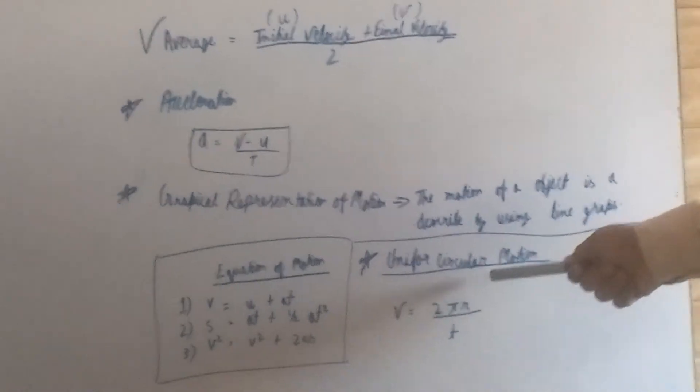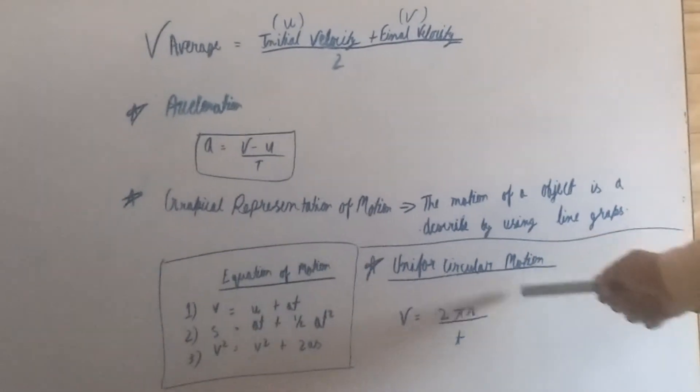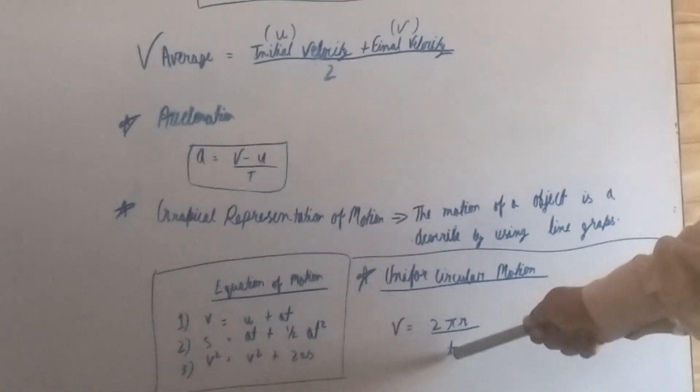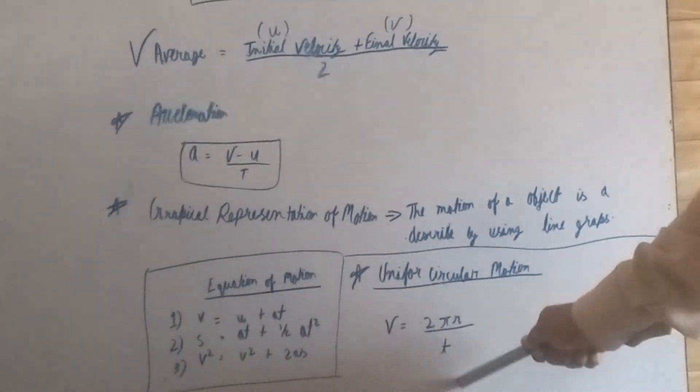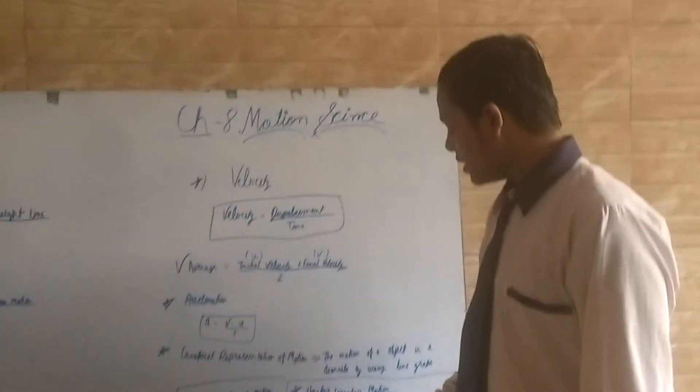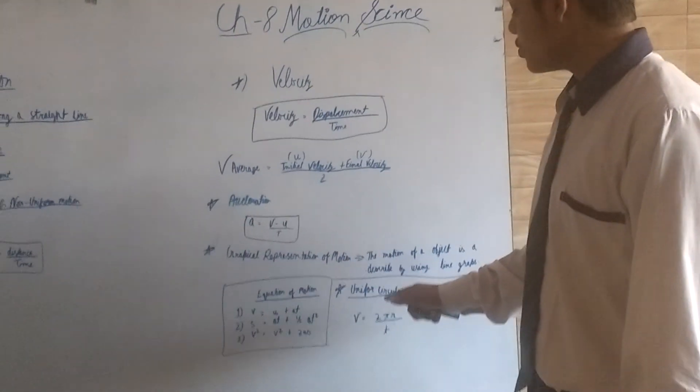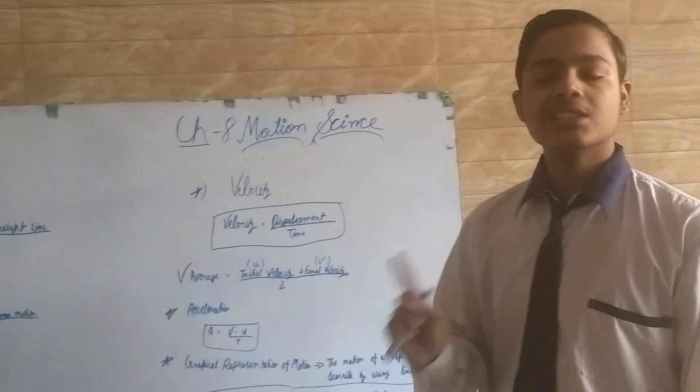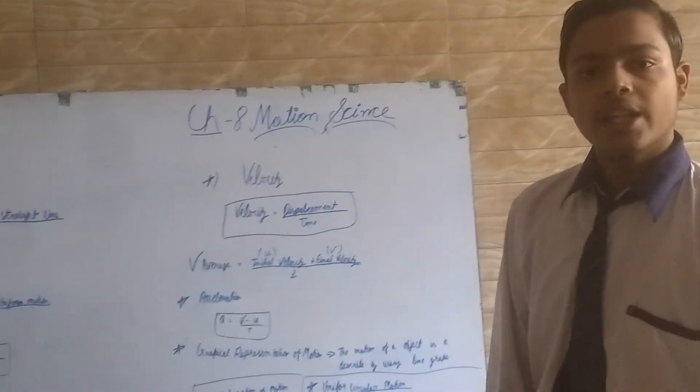Uniform circular motion: The object will be moving in a circular path. Thank you.